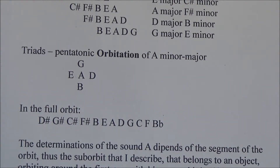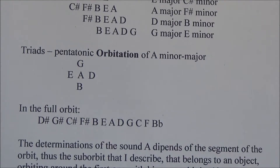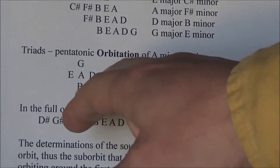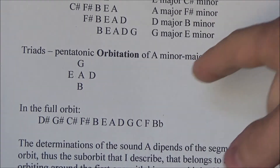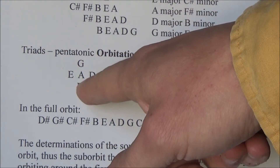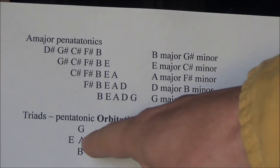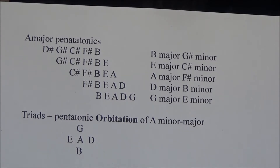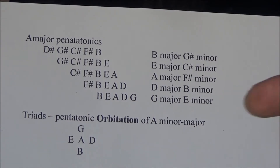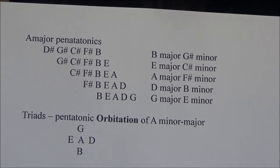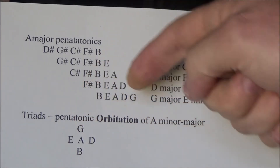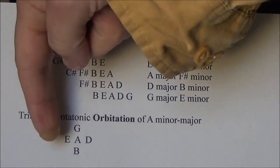The quality of the sound A results from what I play around A. I can play A as a major by playing all these major pentatonics. This is the basic orbit: A in the center, one tone up, one tone down, one fourth up, one fourth down.